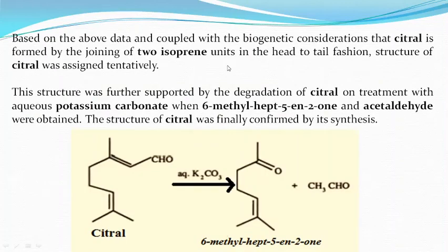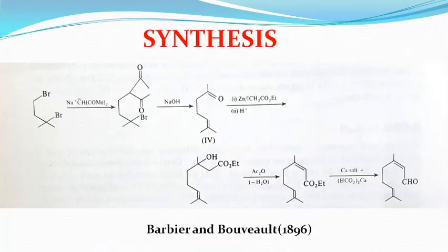Based on the above data and coupled with biogenic considerations, citral is formed by the joining of two isoprene units in the head-to-tail fashion. The structure of citral was assigned tentatively, and was further supported by degradation of citral: on treatment with aqueous potassium carbonate it forms acetaldehyde and 6-methyl-5-hepten-2-one.